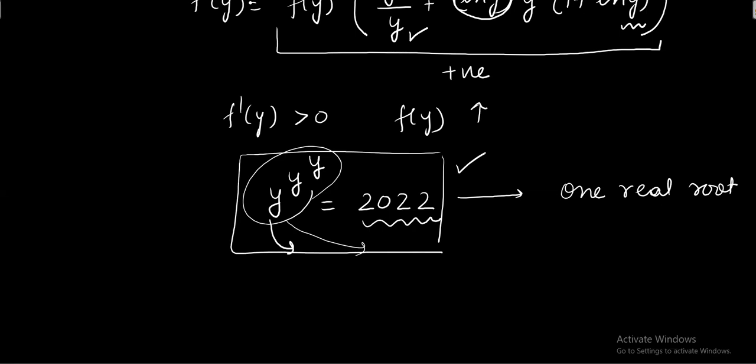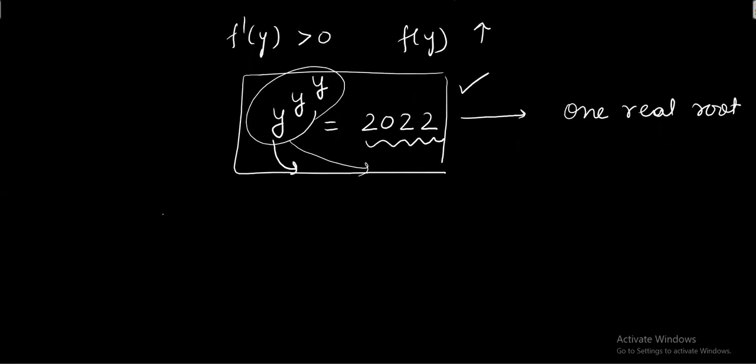Regarding that value of y, it's not possible for us to identify that value. So I'm just assuming that let that real value of y which is satisfying the equation be alpha. That is, alpha to the alpha to the alpha is 2022, and obviously alpha is greater than 2. Okay, but what is y? Y we have assumed x squared plus 2x plus 3. So I'm assuming that when y is alpha, x squared plus 2x plus 3 is actually taking the value alpha. We need to get the values of x and after that we need to get the sum of those values of x.